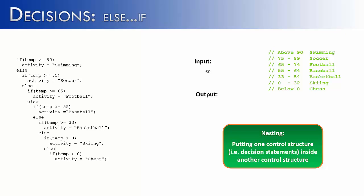Let's see how this would affect the code, as opposed to just using if statements. If we use the same input as before, which is 60, and we got to the first if statement, temp is greater than or equal to 90, that would be false. Then it would execute the else statement because the if statement is false, and it would check if temp is greater than or equal to 75. That also would be false. Then it would execute that other else statement beneath it, and say if temp is greater than or equal to 65. That's also false, and because it's false, it would execute the else statement and say if temp is greater than or equal to 55. Well finally we found a true statement, and activity would be set to baseball.